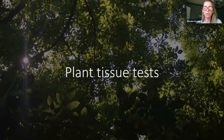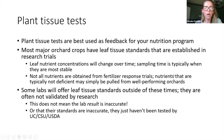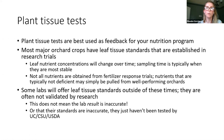Plant tissue tests are best as feedback for your nutrition program. The way that leaf tissue standards are established is through some sort of fertilizer response trial where they look at where you get maximum or close to maximum yield—around 90 percent yield—and they look at leaf tissue standards based on that. For some nutrients, they pull data from well-performing orchards, especially for nutrients that aren't commonly deficient in the area.